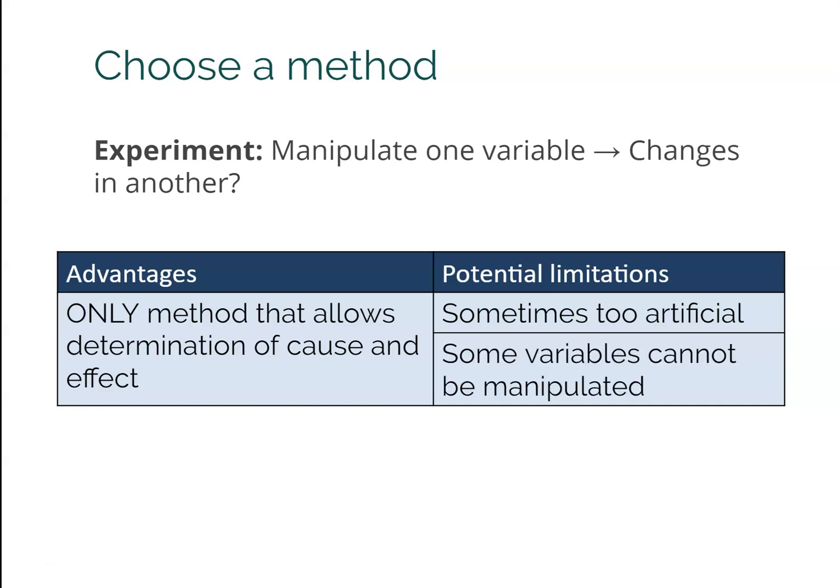Another concern is that some variables cannot be manipulated, either for practical or ethical reasons. For practical reasons, we cannot make people be Christian, or male, or heterosexual. And for ethical reasons — if I want to know how young children are affected by the death of a parent, a true experiment would require letting some kids' parents live and killing others', which is technically possible but obviously you shouldn't do it. A better approach is to find kids whose parents have already died and interview them — still sad, but far more ethical.